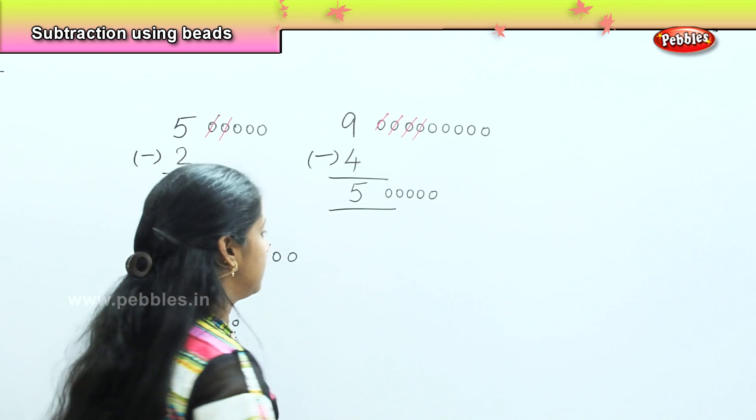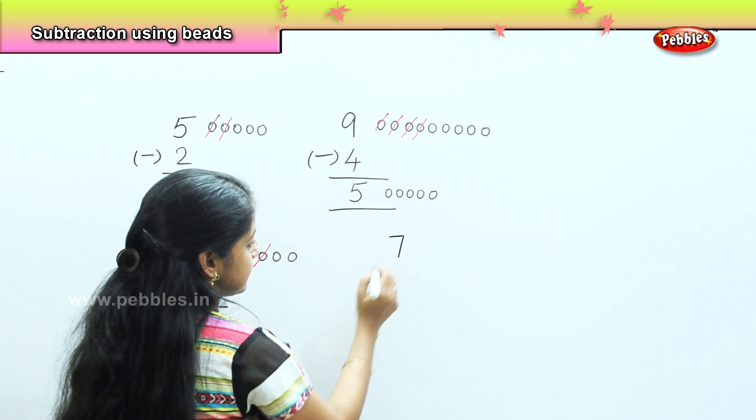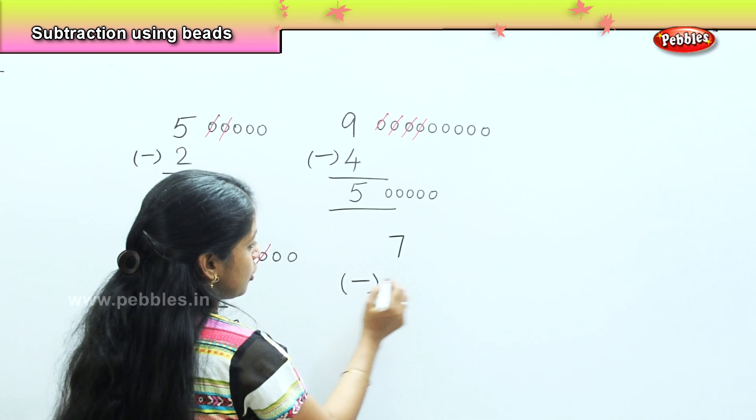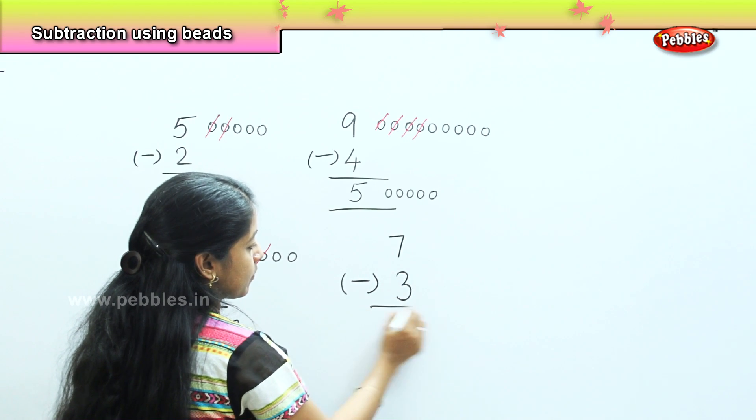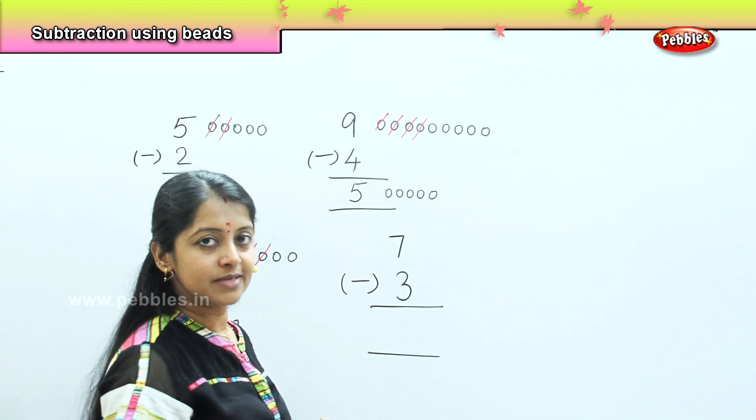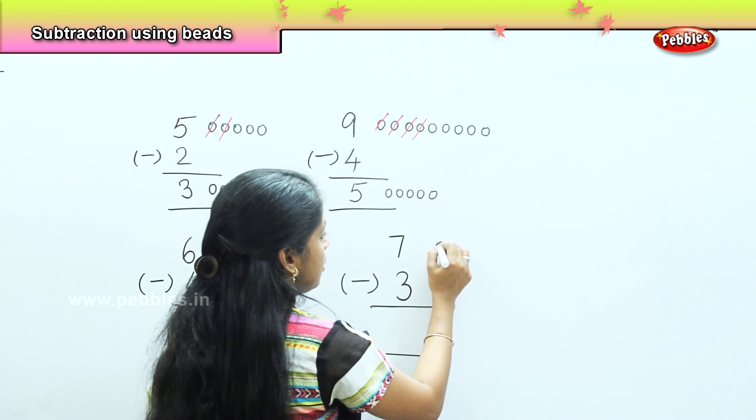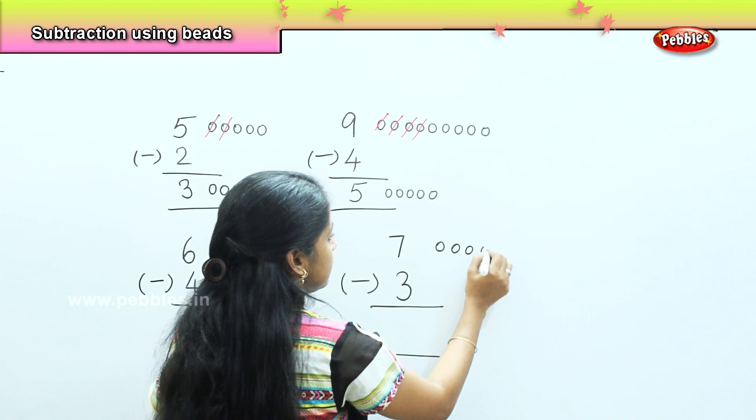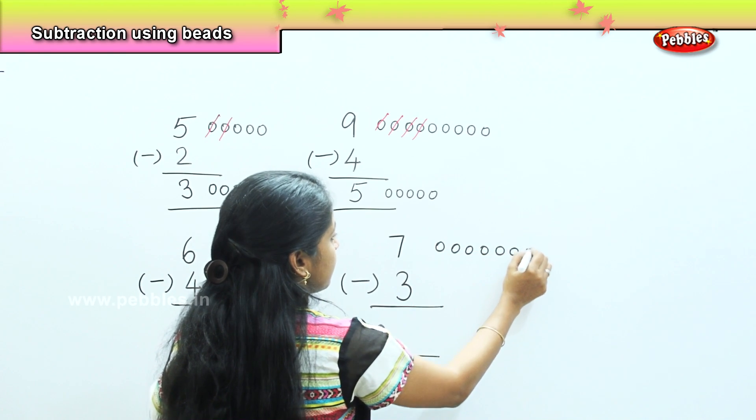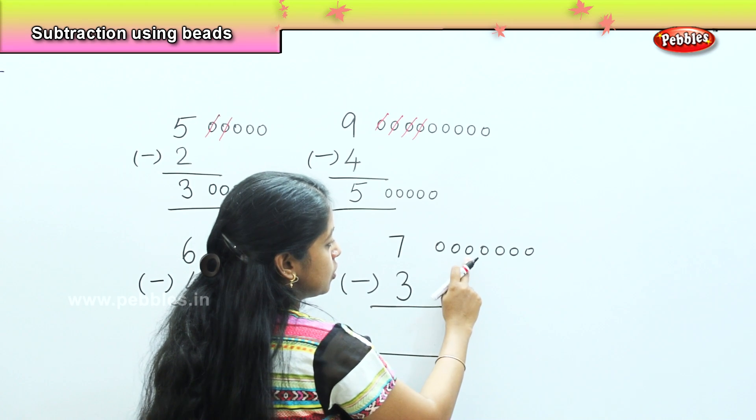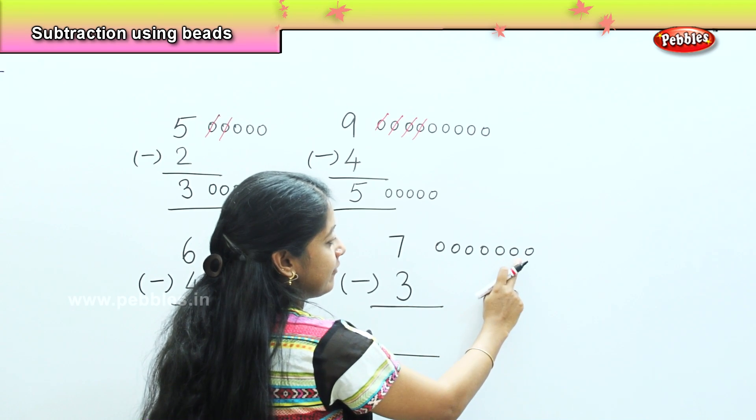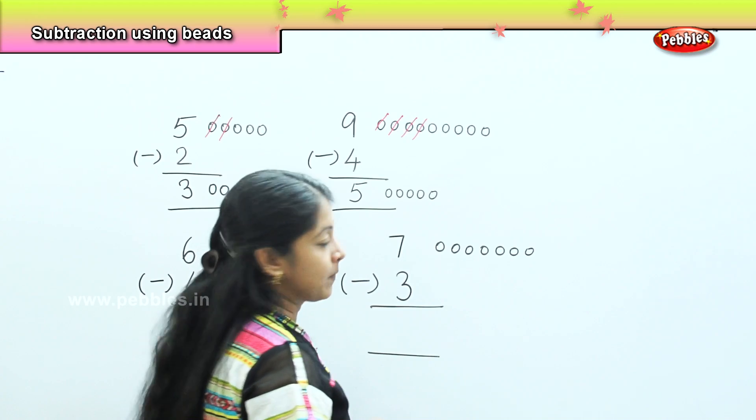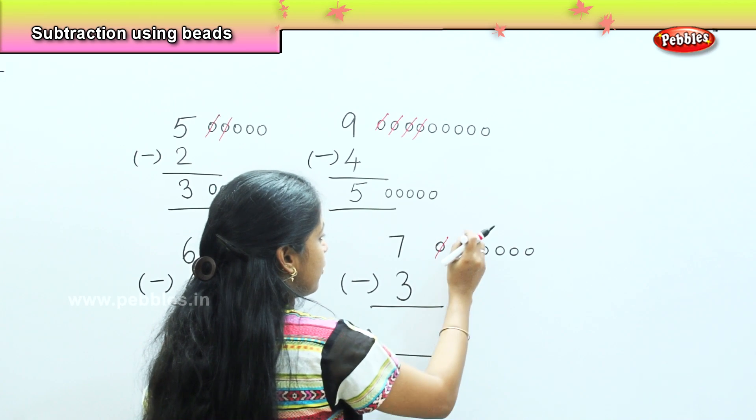Shall we do with the last sum here? Now I have 7 and I need to reduce 3 from it. So what is the first step, children? I will draw 7 beads here. Shall we count? 1, 2, 3, 4, 5, 6, and 7. I need to strike off 3 from here.